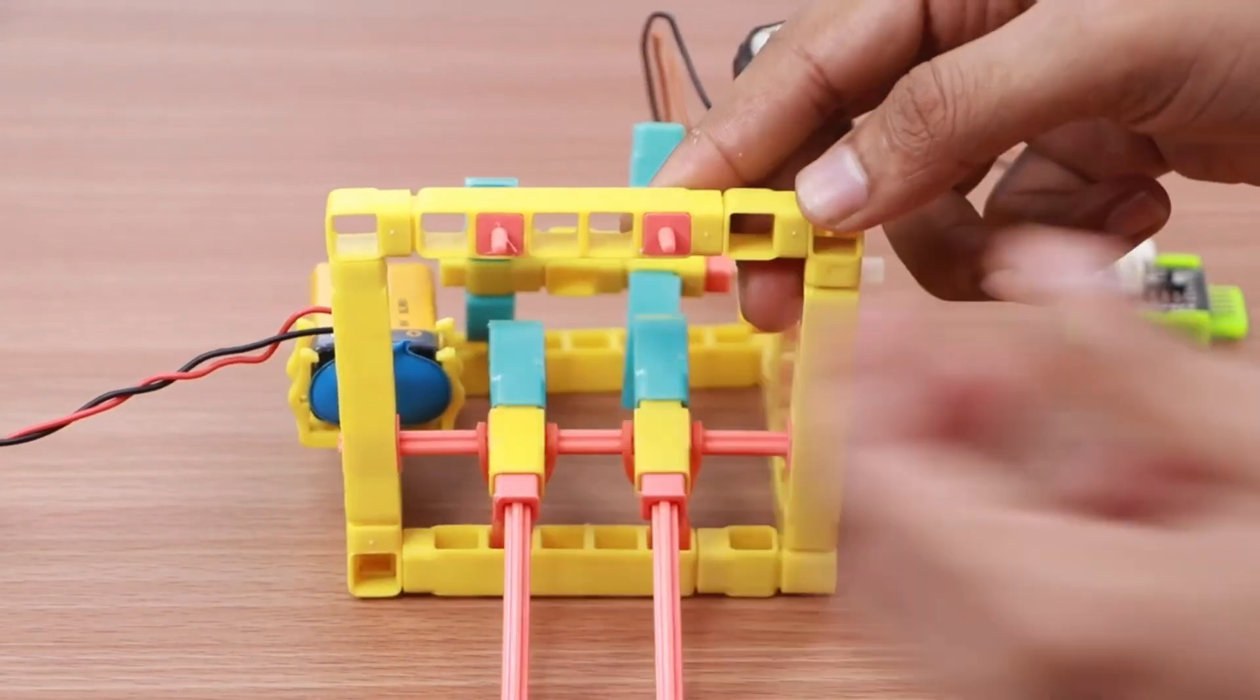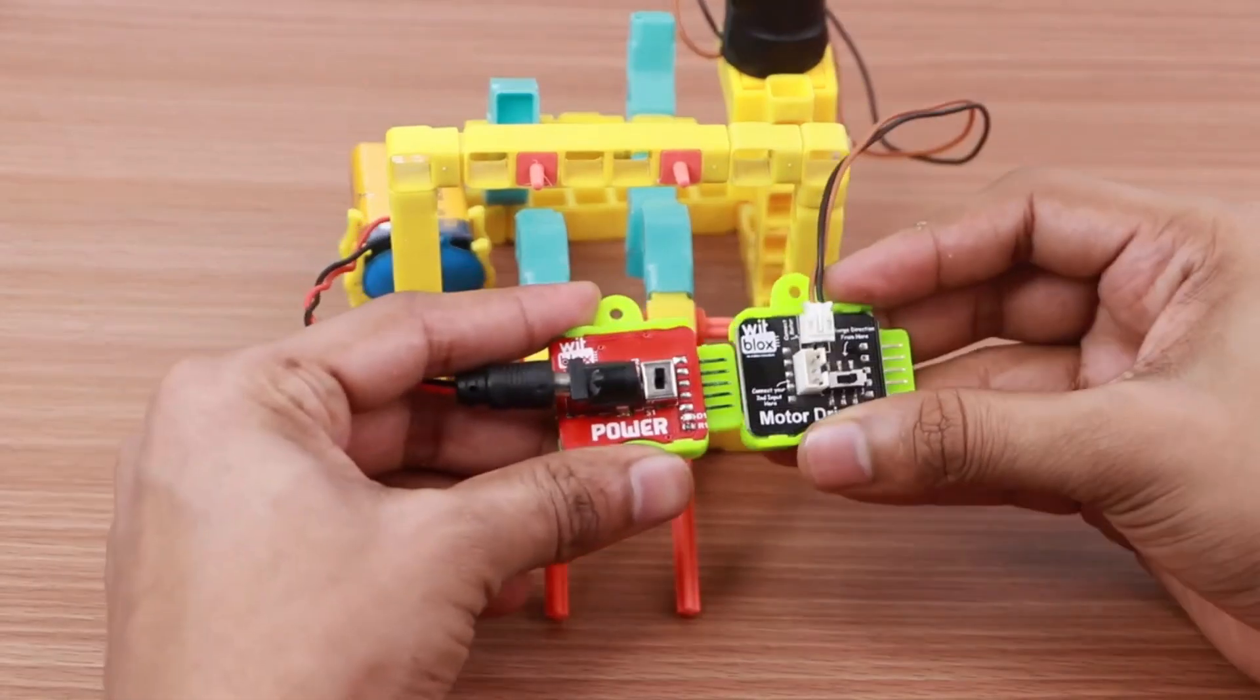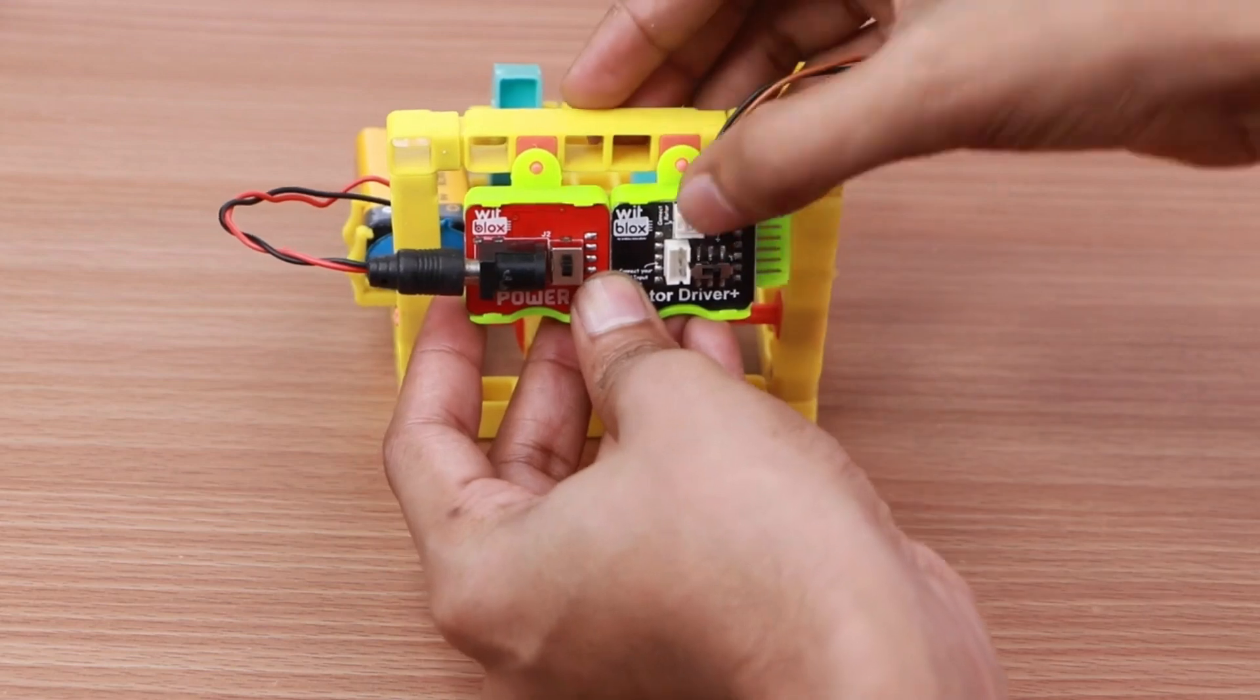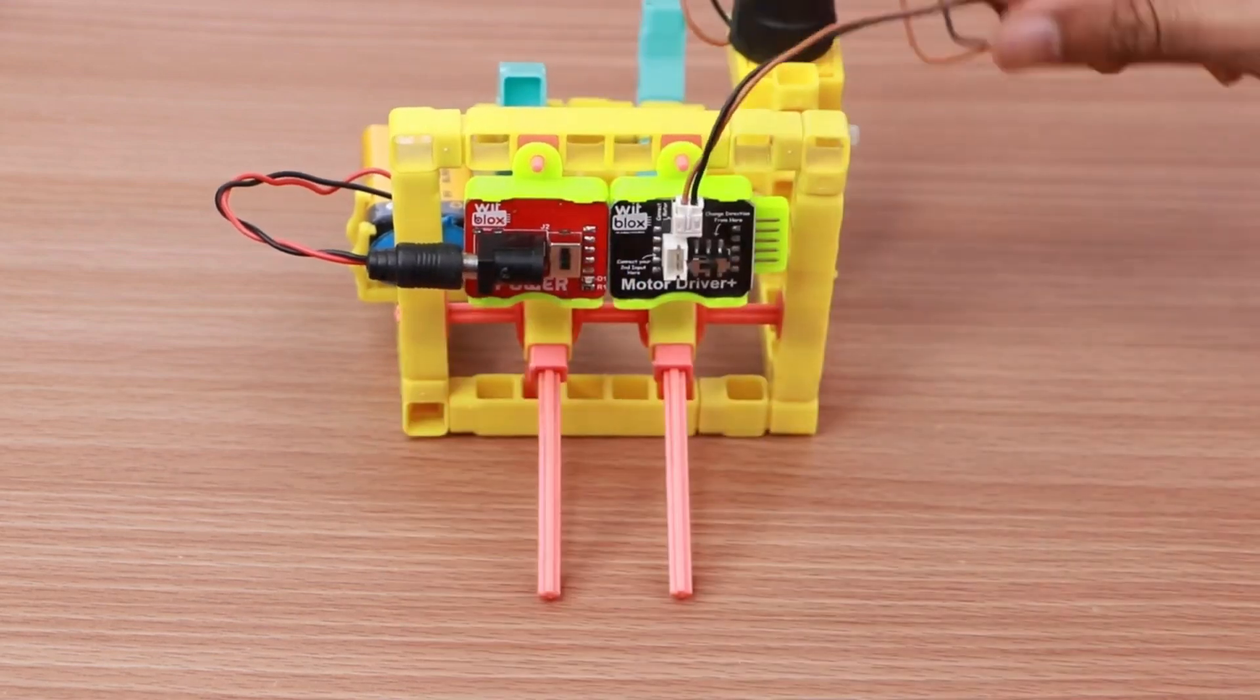Let's create the logic of the drummer. Take the power blocks and join it to the motor driver blocks. Once connected, attach the logic to the drummer base.